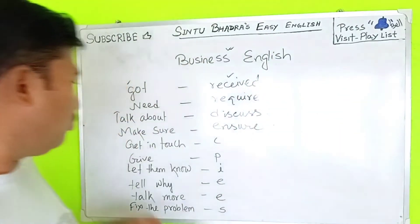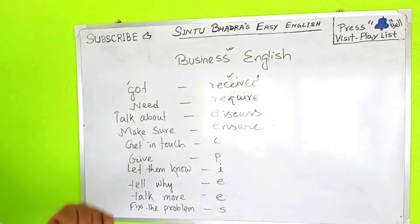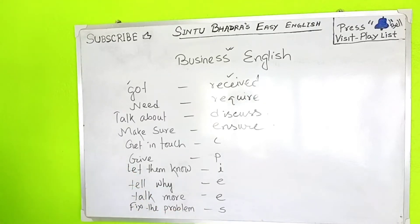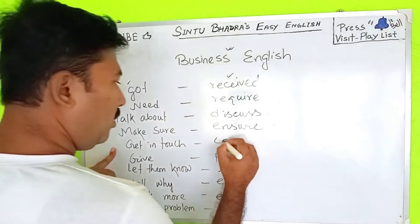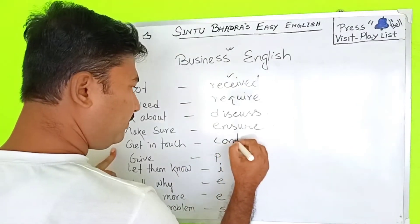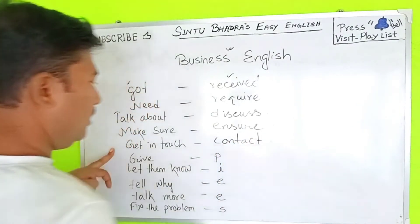Next: 'get in touch' — in business English, instead of saying 'get in touch with the customers,' you say 'contact.' So: 'Contact the customer,' not 'get in touch with the customer.'